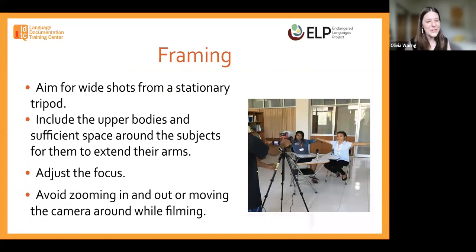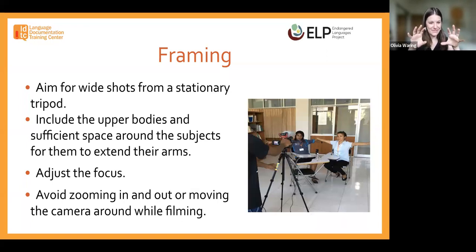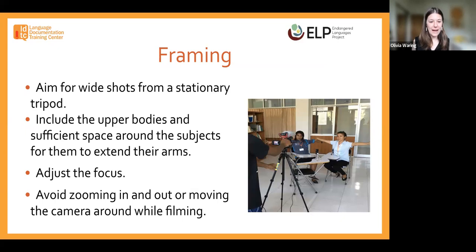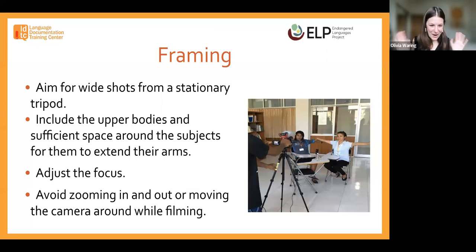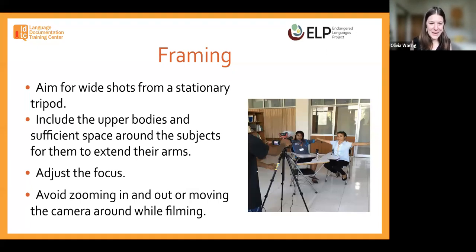What you'll end up with is one video file and two audio files — one from the video camera and one from the dedicated audio recorder. It's always great to have redundancy in your recordings. When setting up your shot, keep a few principles about framing in mind. Make sure your video camera is stably situated — often that will involve using a tripod to keep it very level and steady. Wide shots are best; you're not going to want to zoom in too close on the speaker's face. Include their upper bodies and test before recording that there's sufficient space for speakers to extend their arms in all directions.